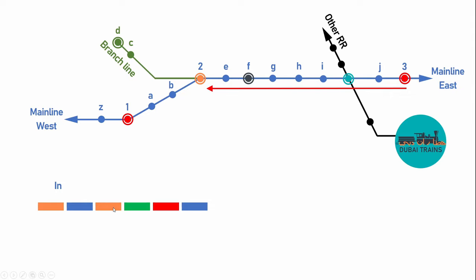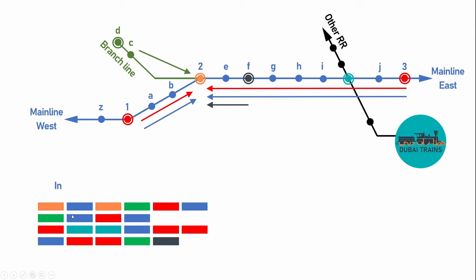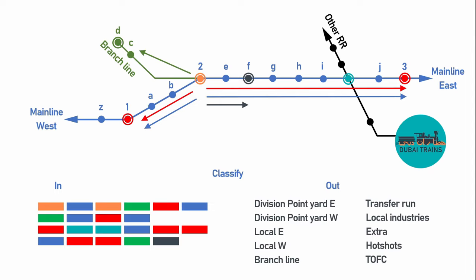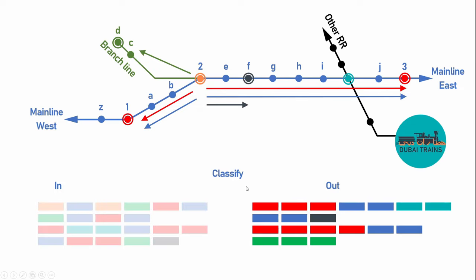Here we have one train coming in from yard three with cars that have to go to different destinations. Inbound trains are only half the fun — there are also outbound trains going east and west to the division point yards, locals on the east and west, branch lines, and so on. The cars that came in have to be classified or sorted to originate into one of these new outbound trains.